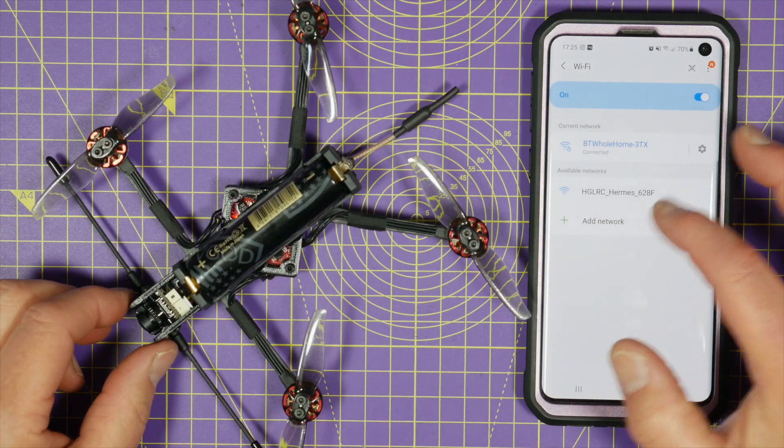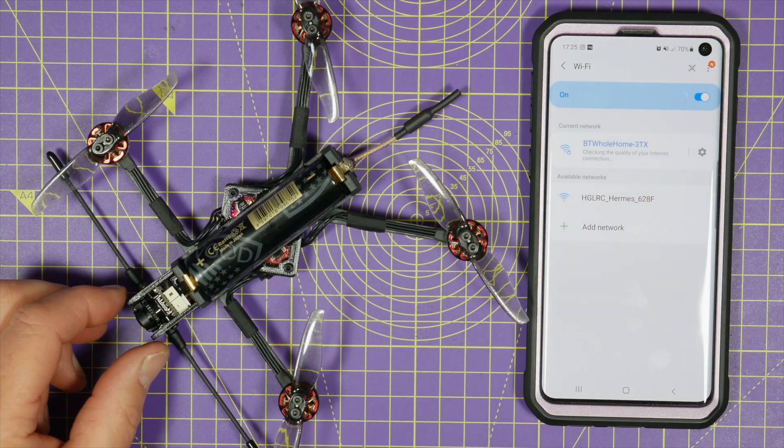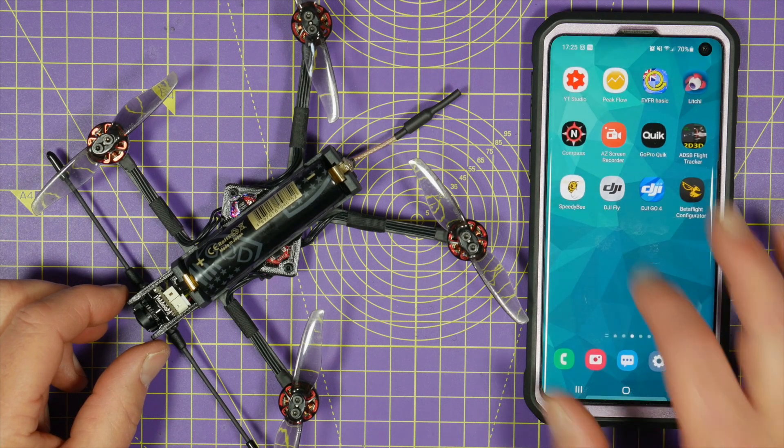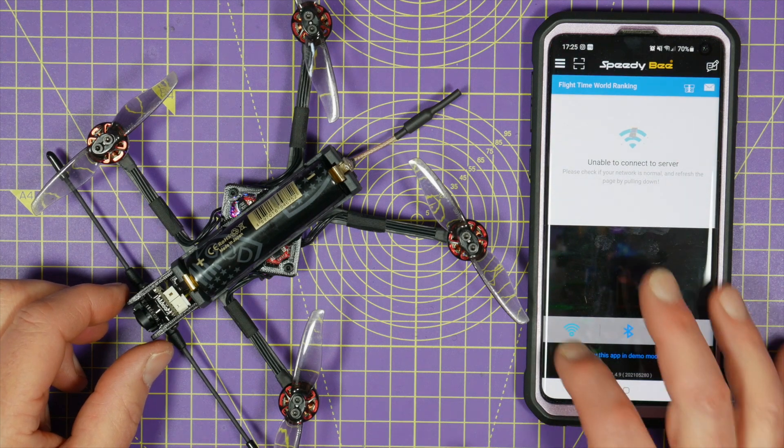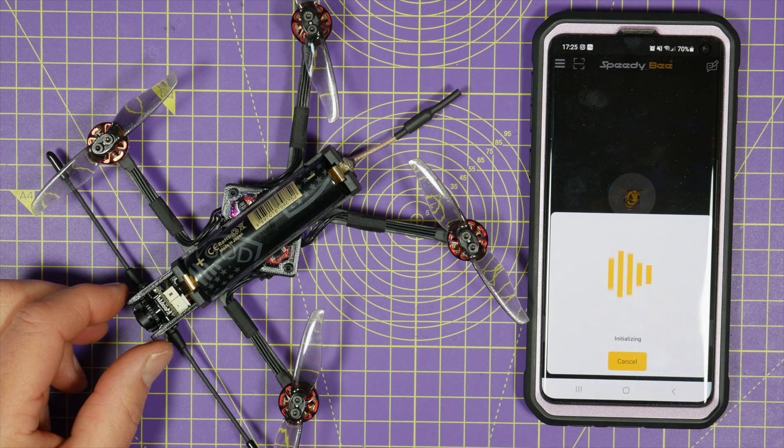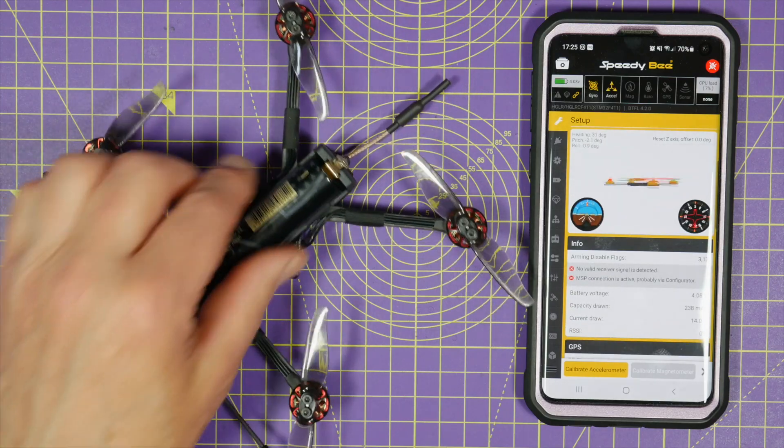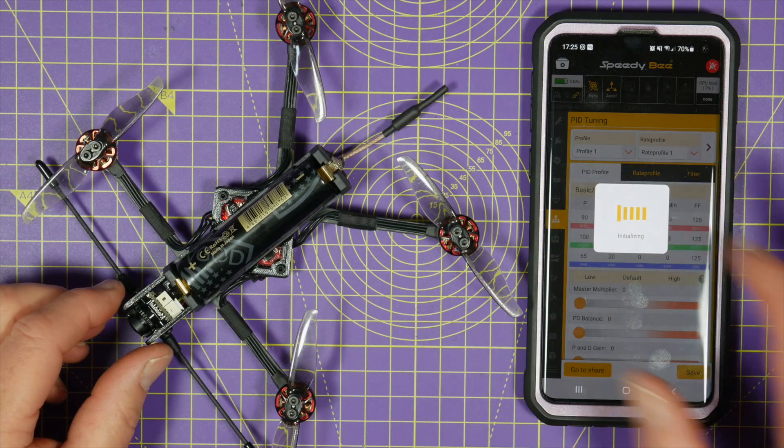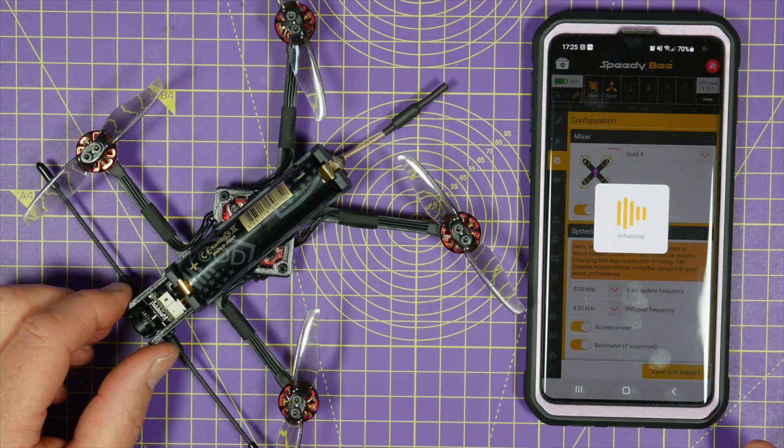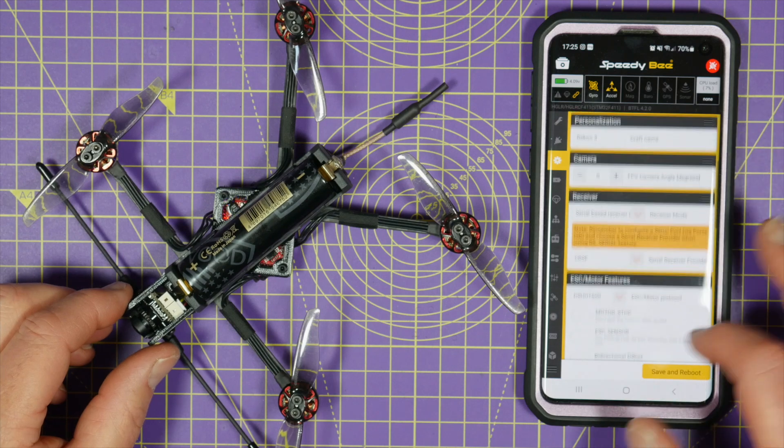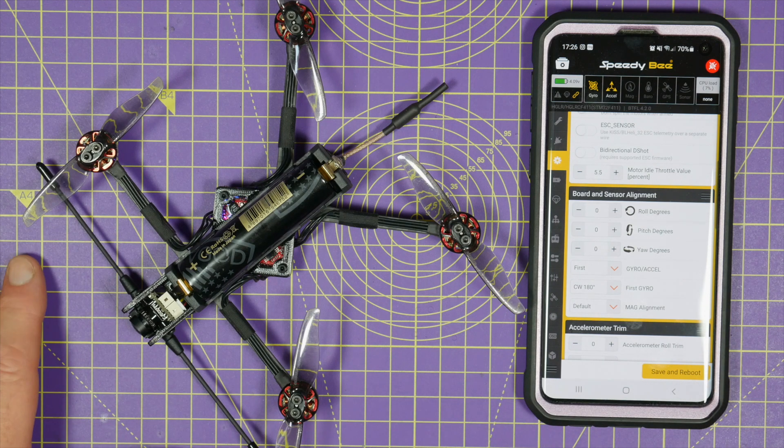When you turn your quad on, you'll find in your settings you've got a network called HGLRC Hermes something or other. If you just connect to that and then start the Speedybee app, use WiFi, connect. Fantastic. So I've got my quad connected. You can see it whizzing around there. We can set up our PIDs. All very nice. So you can use this out in the field. No cables. No laptop. Absolute doddle to use.